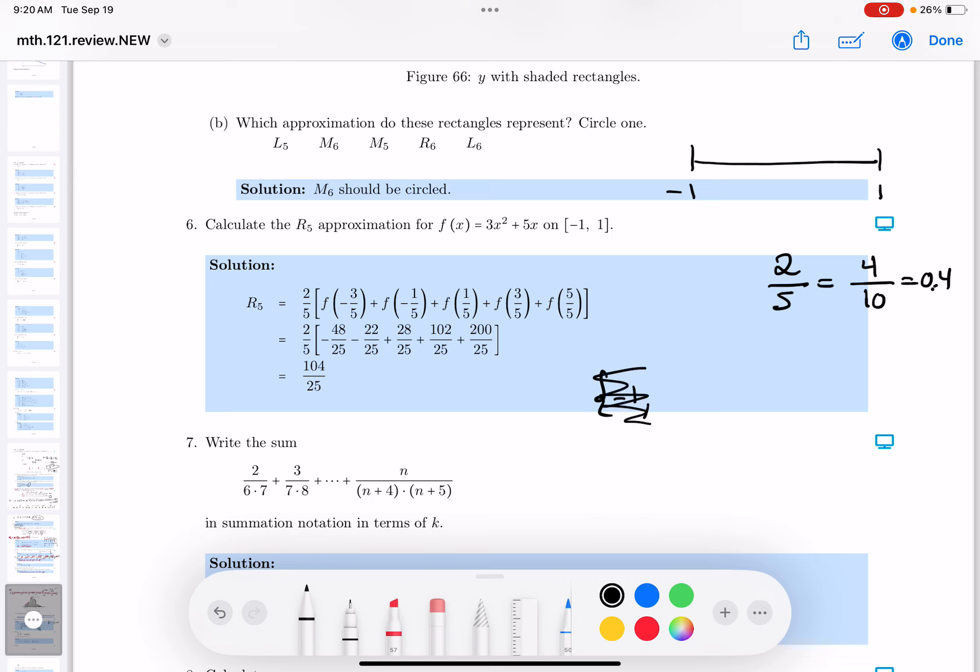Let me erase this again over here. It's important to understand that we need to count. So I'm going to write this as minus 5 fifths. That's minus 1.